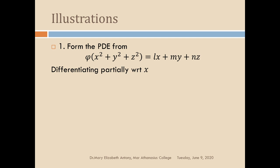Let's see a few examples. The first question is: form the PDE from phi of x squared plus y squared plus z squared equal to lx plus my plus nz. The technique involves partially differentiating the above equation with respect to x and with respect to y.